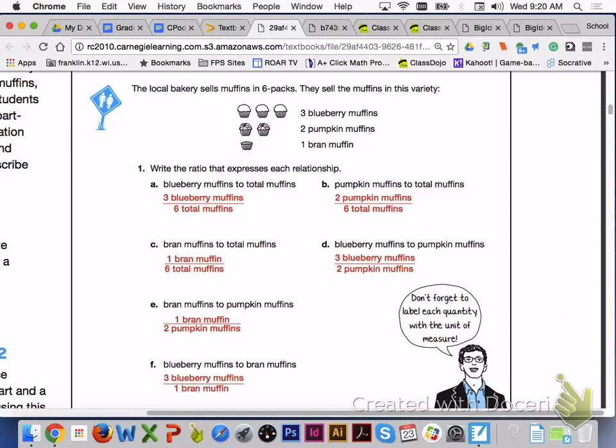For number 1, letter A, we should have 3 blueberry to 6 total. B, 2 pumpkin to 6 total. C, 1 bran to 6 total. D, 3 blueberry to 2 pumpkin. E, 1 bran to 2 pumpkin. And F, 3 blueberry to 1 bran.